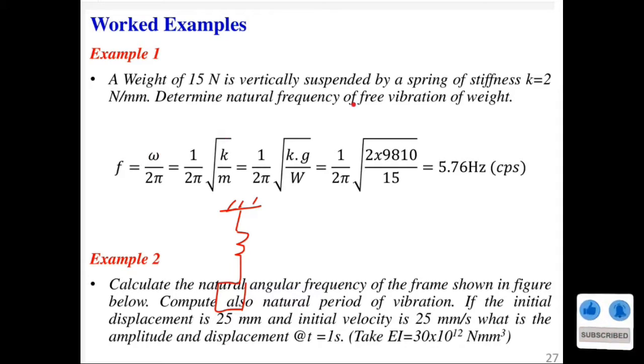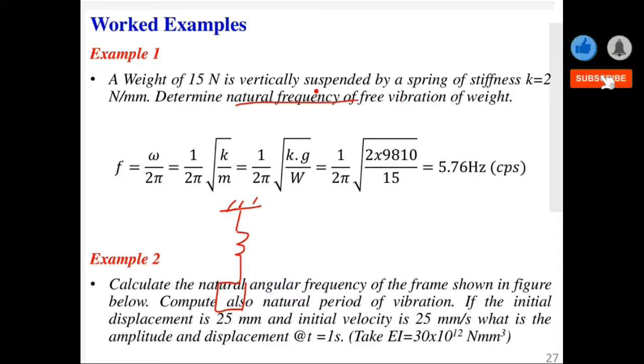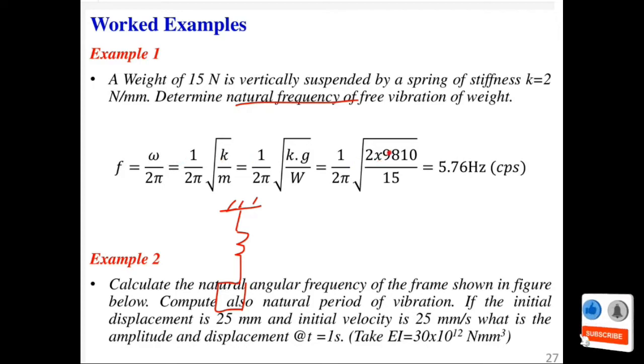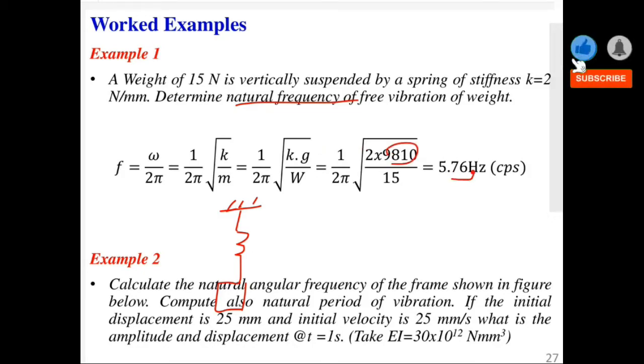Note that there is a difference between natural frequency f and angular frequency. When we say natural frequency here, we are talking of f. You have the expression, substitute your values - the acceleration due to gravity g is given - and this gives us 5.76 hertz.